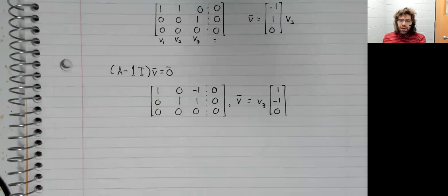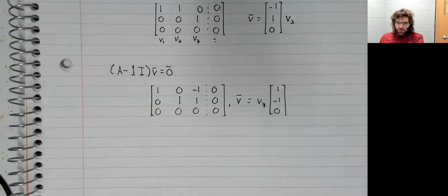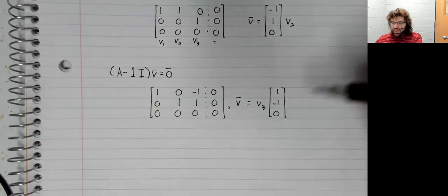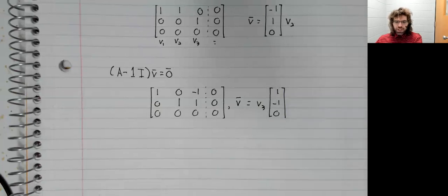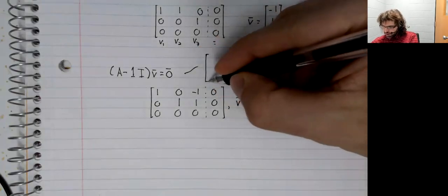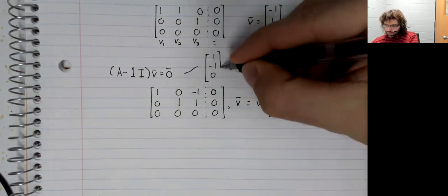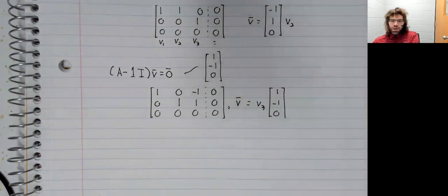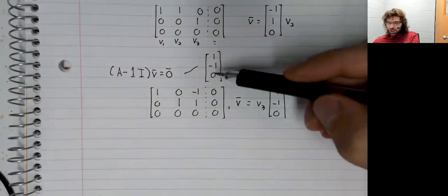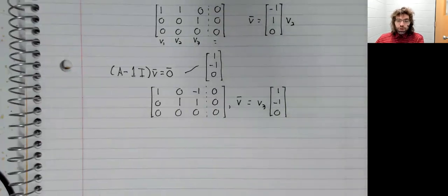The same thing happens here. We find the eigenvectors, and there are infinitely many of them, but we can only get one linearly independent eigenvector. Like one, negative one, zero. Any other eigenvector we get would be a constant multiple of this. And now we're done.